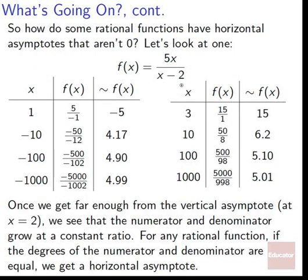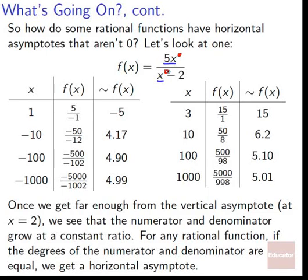Once we get far enough from the vertical asymptote at x equals 2, the numerator and denominator grow at a constant ratio — 5x and x. For any rational function, if the degrees of the numerator and the denominator are equal, we will get a horizontal asymptote that isn't equal to 0. Since the 5x and the x both have degree 1, they're growing at the same rate, and only the multiplicative factor of 5 determines the height.